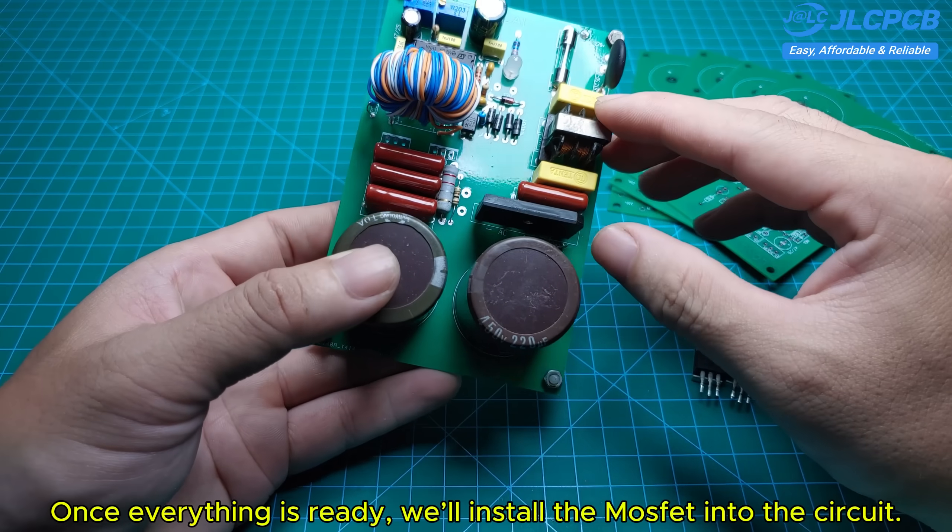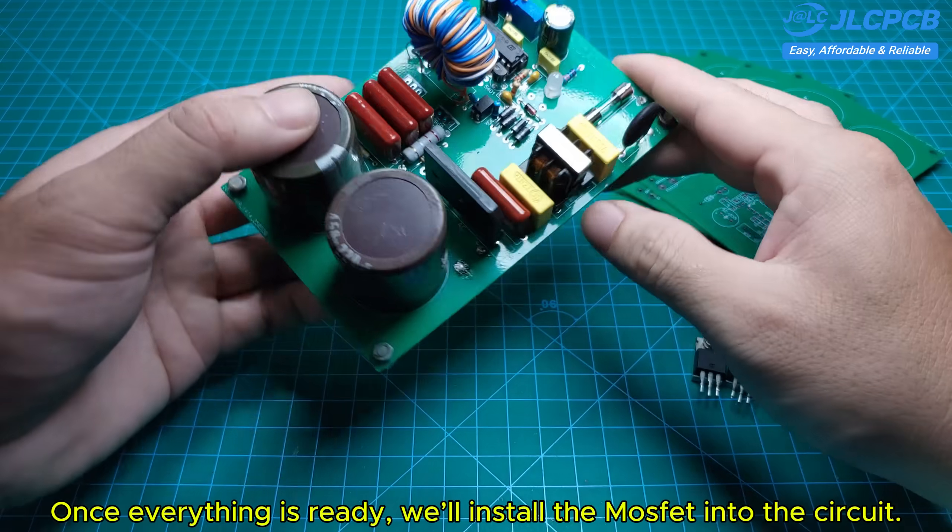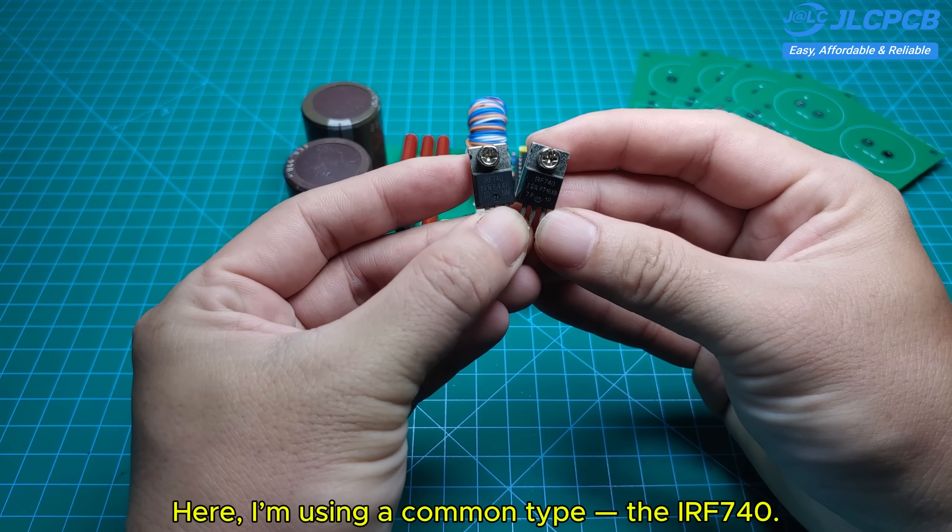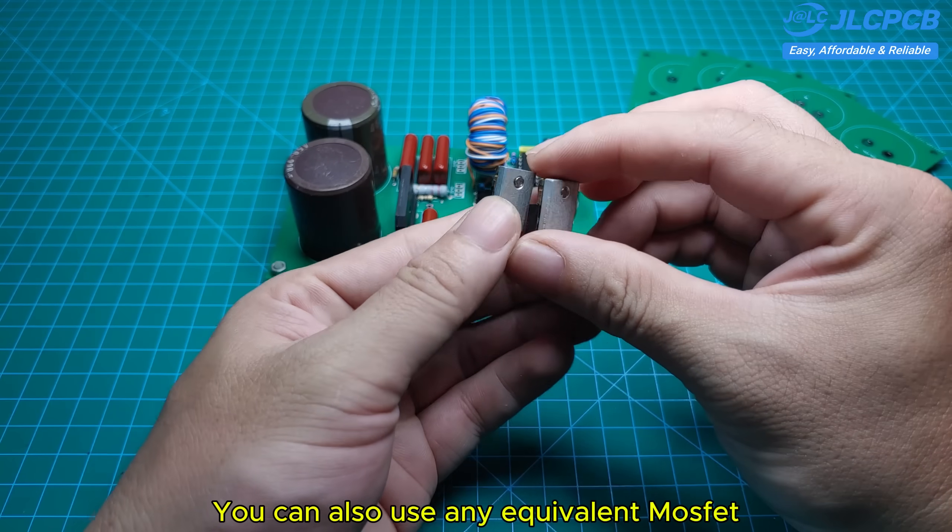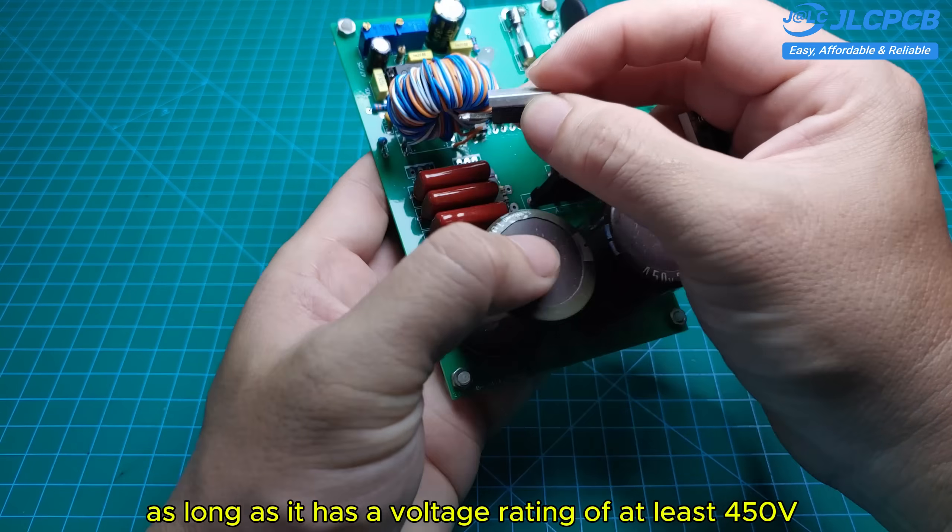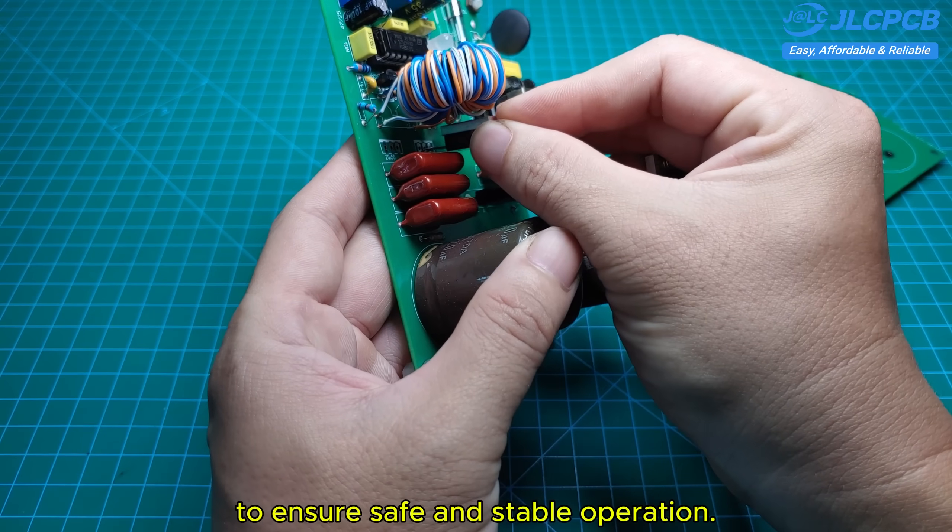Once everything is ready, we'll install the MOSFET into the circuit. Here, I'm using a common type, the IRF740. You can also use any equivalent MOSFET, as long as it has a voltage rating of at least 450 volts to ensure safe and stable operation.